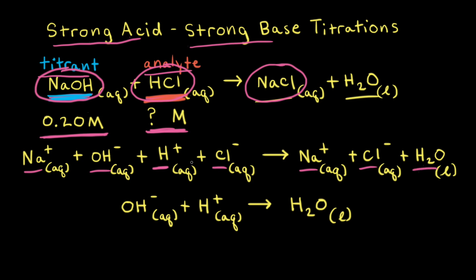When writing the net ionic equation, we cross out the spectator ions. Since we have sodium cations on the left and on the right, we cross out the sodium cations, and the same with the chloride anions — both are spectator ions. What we're left with is our net ionic equation: hydroxide anions plus H⁺ cations form water.